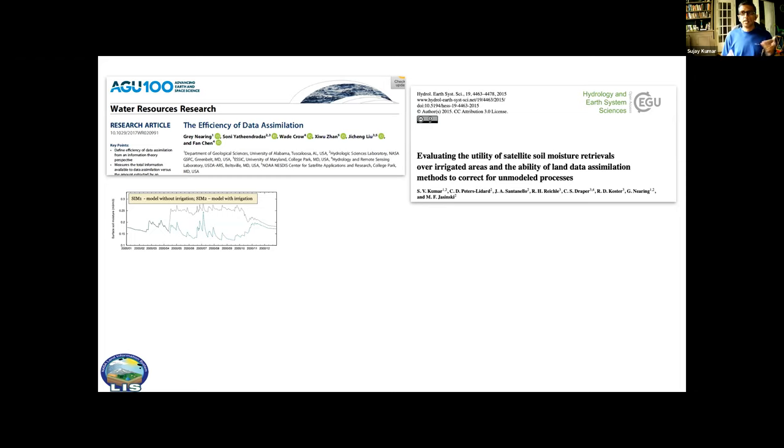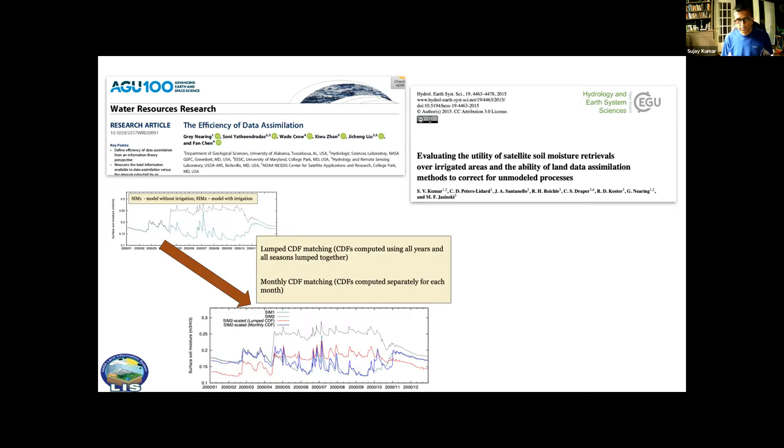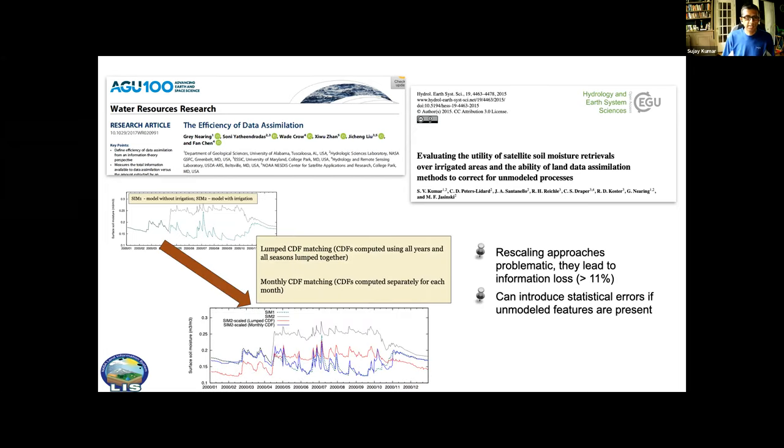I published a paper in 2015 critiquing the rescaling approaches. When unmodeled processes are present, we used irrigation as an example. Using these rescaling approaches can actually introduce statistical errors. Here we have two time series, the solid line represents irrigated soil moisture and the bottom line is without irrigation.